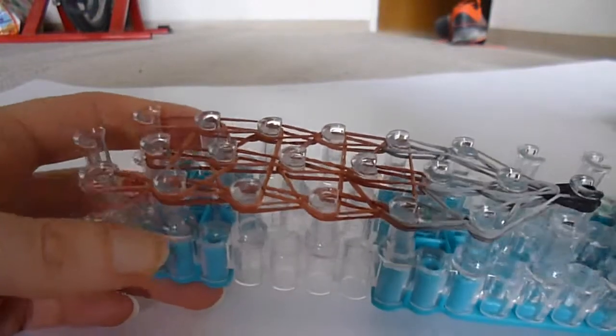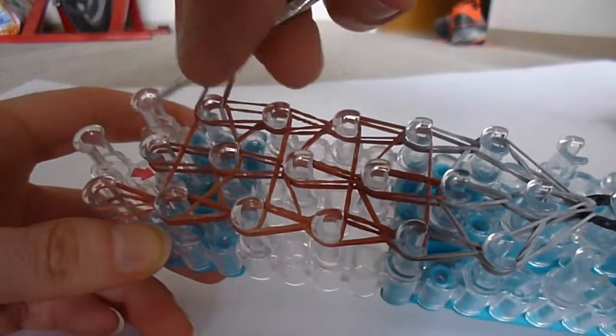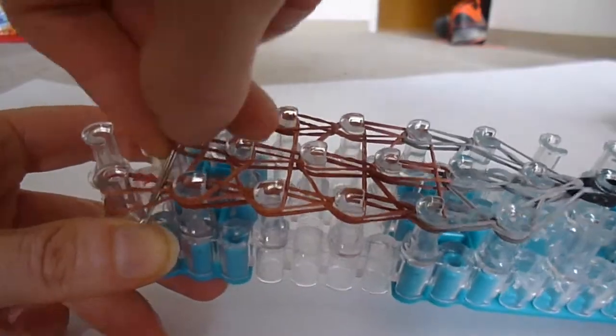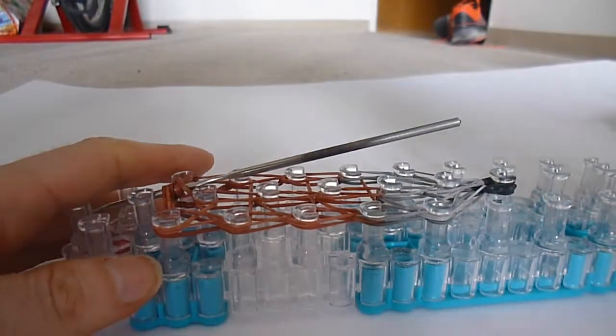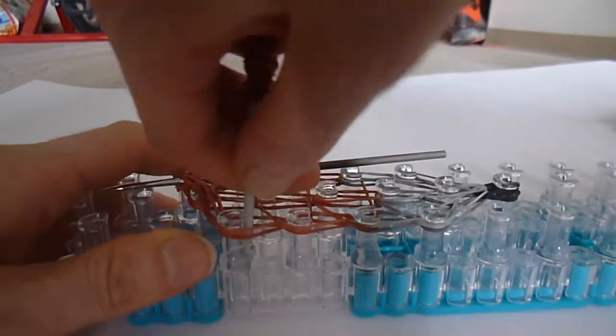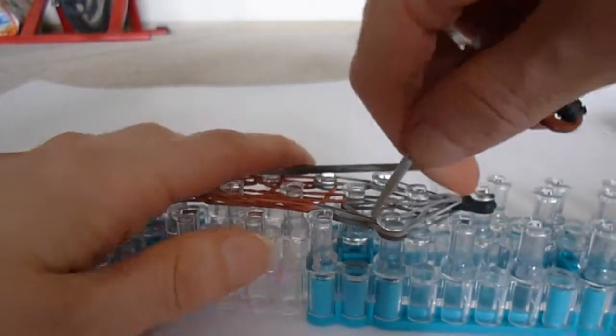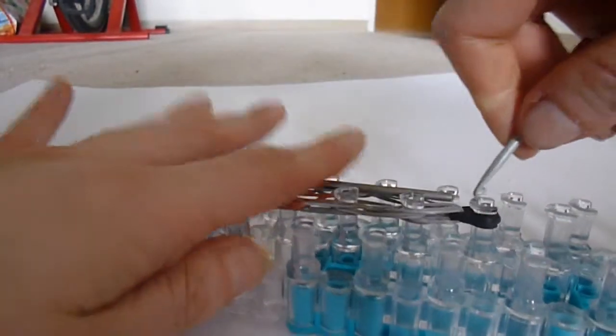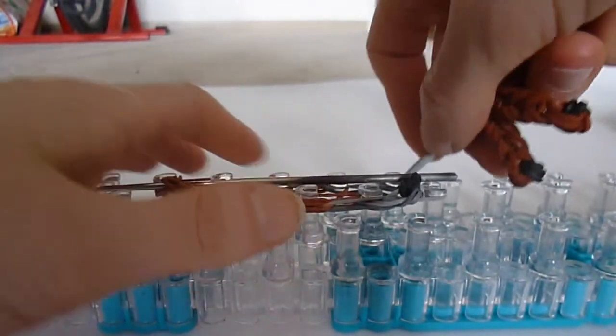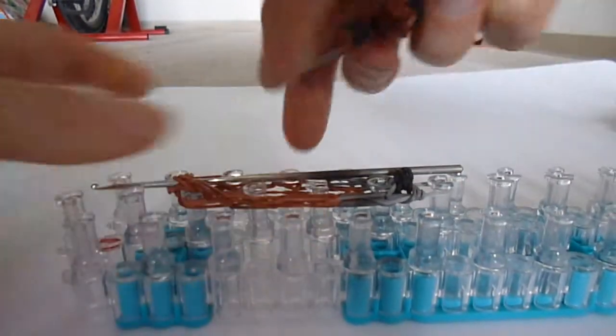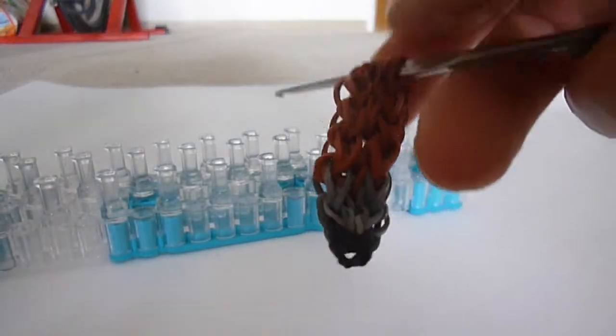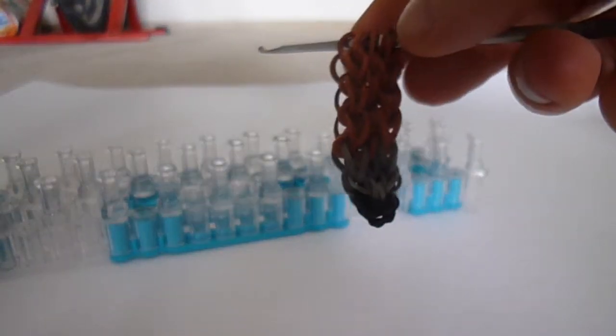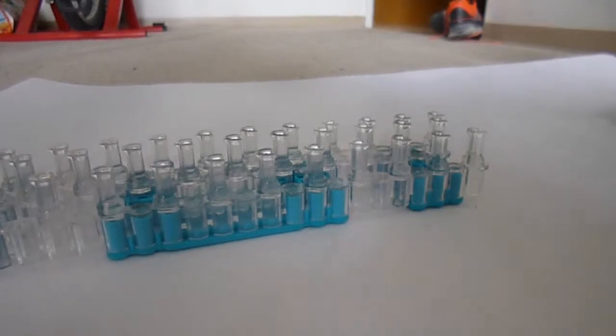And then we're going to take all of the bands, which are on the top three pegs, going across. Put them on your hook, and carefully ease this off of the loom. Okay, so this can go on holding hook, or you can leave it on the hook that it's on. Either is alright. We're going to make our arms and our legs.